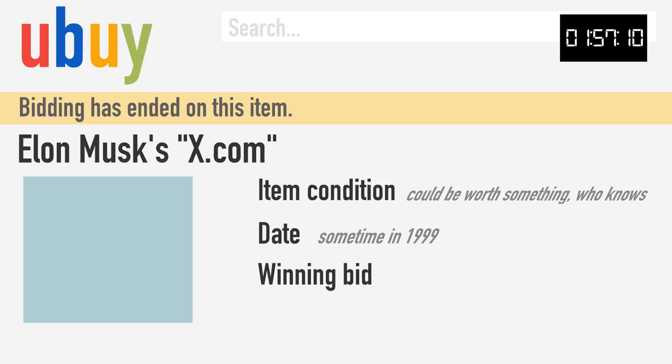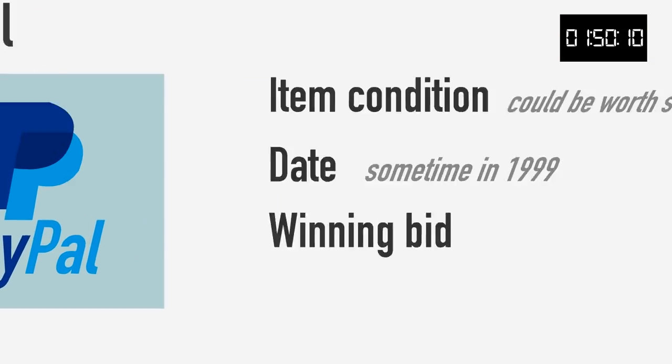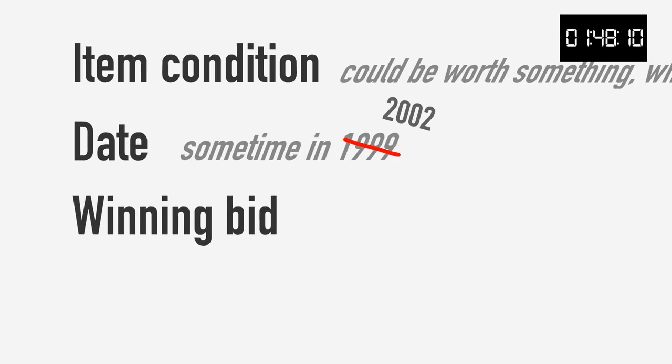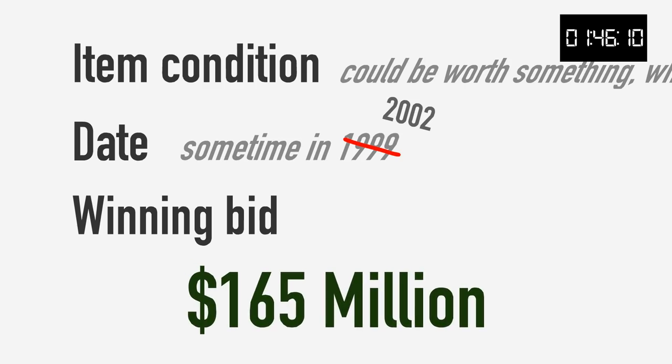Musk used some of this money to co-found X.com, a user-friendly online financial service. You might know it better today as PayPal. And when eBay purchased PayPal in 2002, Musk's shares netted him a cool $165 million.